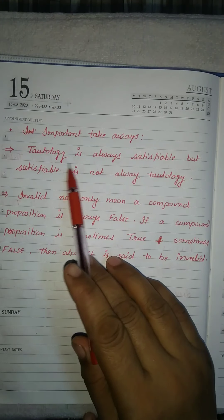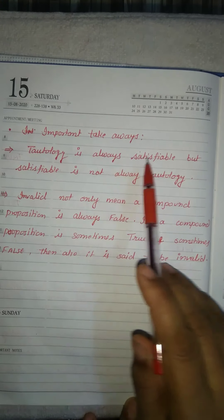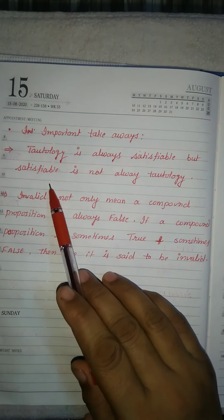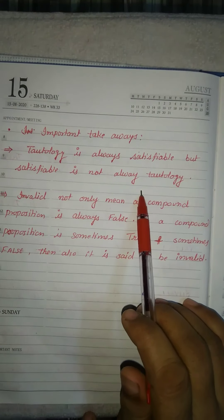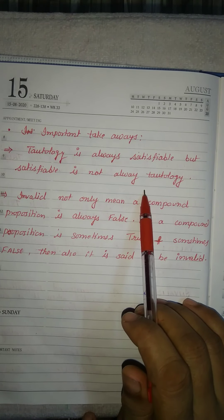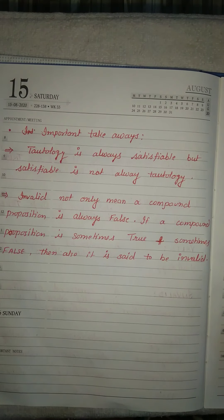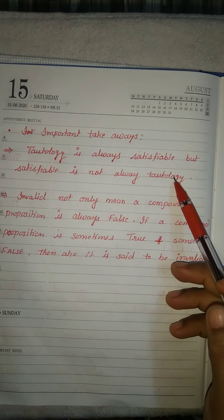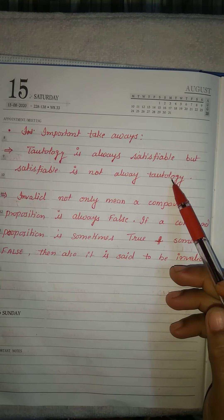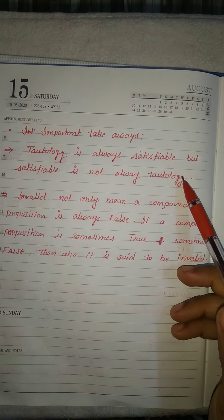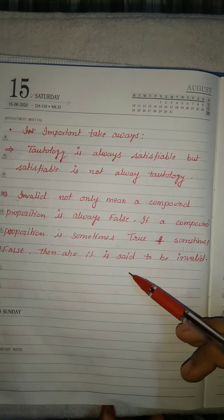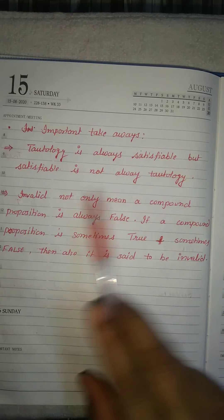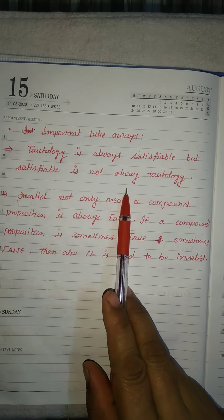Important points to remember: tautology is always satisfiable, but satisfiable is not always tautology. In satisfiable, if two or three 1s are present in your truth table, it is satisfiable. But in tautology, all 1s must be present. So tautology is always satisfiable, but satisfiable is not always tautology.